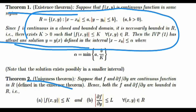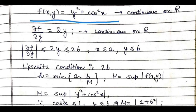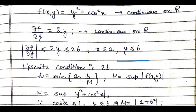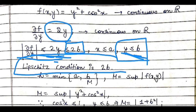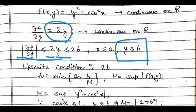Now we apply these conditions. Our given function is f(x,y) = y² + cos²x. This is continuous, and ∂f/∂y = 2y is also continuous. We assume y is in the interval [-b, b], so y is bounded. The supremum M of |f(x,y)|: since y is bounded by b, we have y² ≤ b², and cos²x ≤ 1, so M ≤ b² + 1.